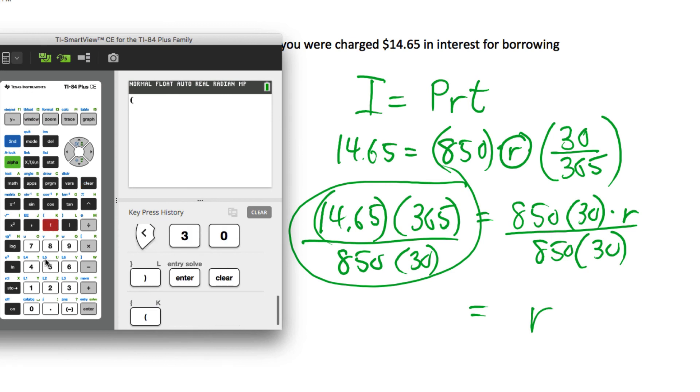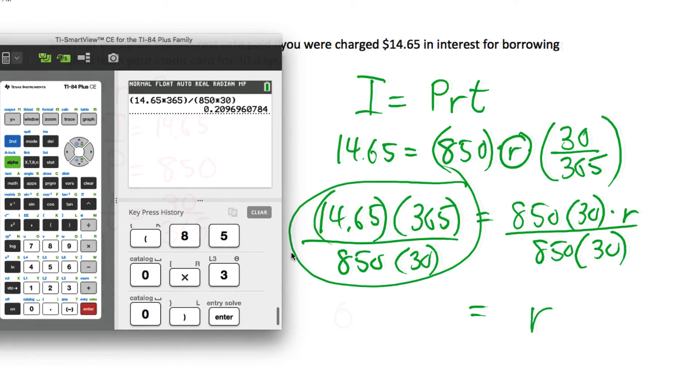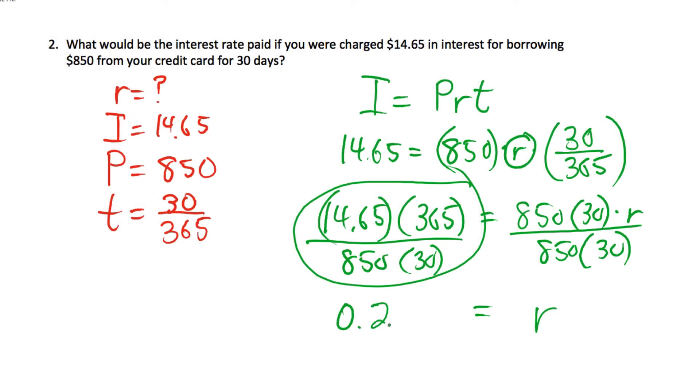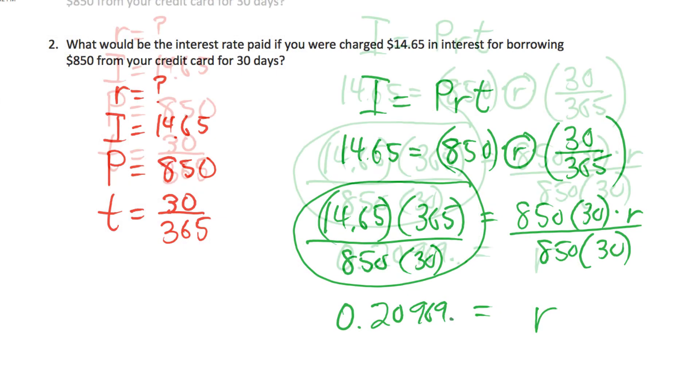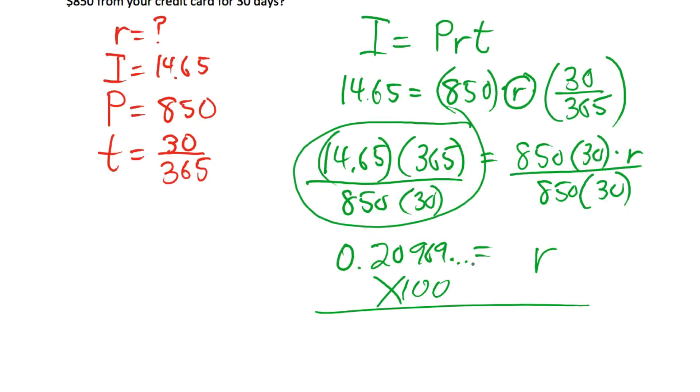So we're going to have to bracket the numerator because we have two numbers multiplied first before we divide, 14.65 multiplied by 365 close up that bracket divided by the bracket of the bottom 850 times 30. This will be the decimal for my interest rate, which if I then multiply by 100 gives me 21.0% interest rate, a very high interest rate which is typical of credit cards.